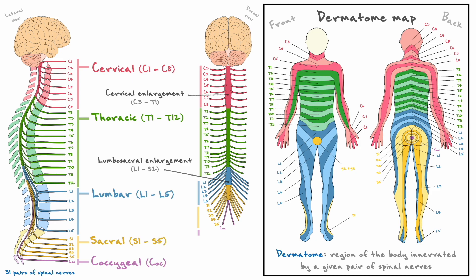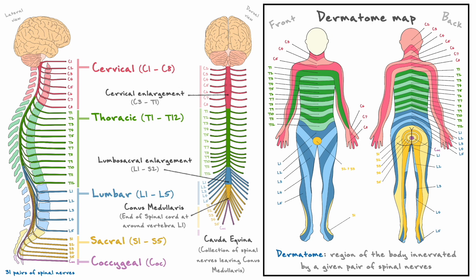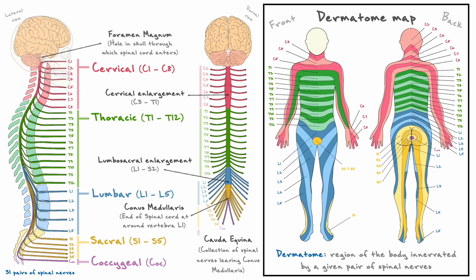Another anatomical element is that the spinal cord is actually shorter than the vertebral column. The spinal cord, starting from the caudal end of the brainstem, only reaches the first few vertebrae of the lumbar divisions. This terminal end is called the conus medullaris. As a result, the spinal nerves that come from the legs produce what is known as the cauda equina, which is basically the collection of spinal nerves that innervate the lower body and leave from the end of the spinal cord. Additionally, there is a hole in the skull called the foramen magnum that allows the spinal cord to pass through and communicate with the rest of the central nervous system.